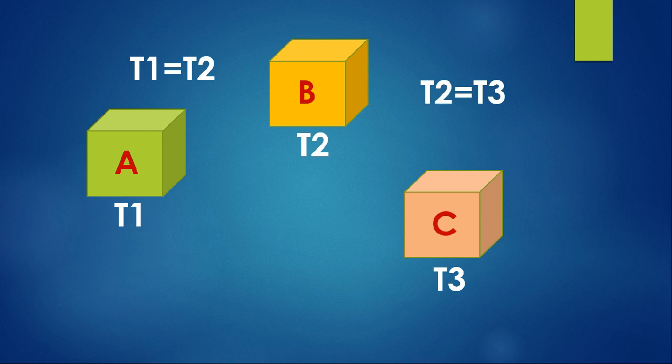If bodies B and C both are in thermal equilibrium, then we can write T2 equal to T3. In this case, we can also write that A and C are also in thermal equilibrium, that is T1 equal to T3. This is the Zeroth Law of Thermodynamics.